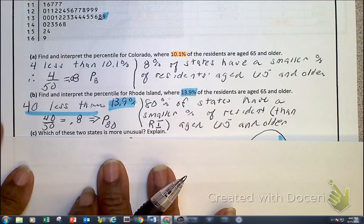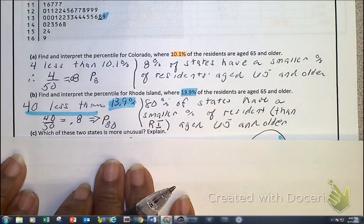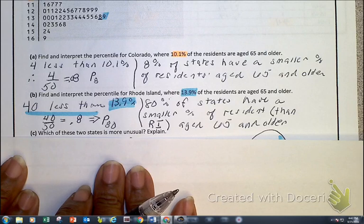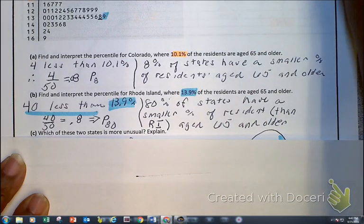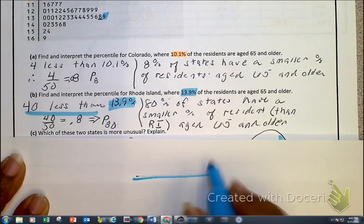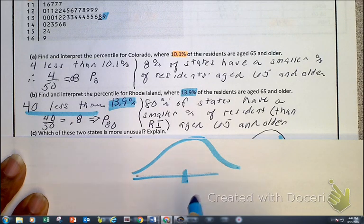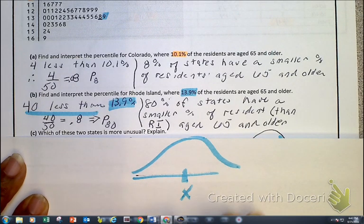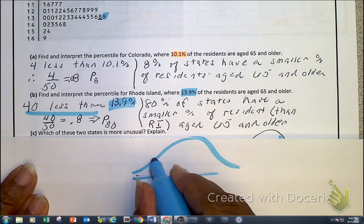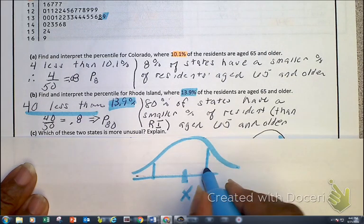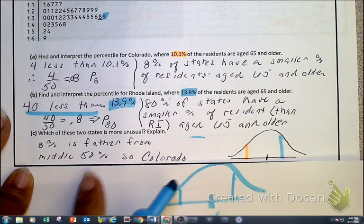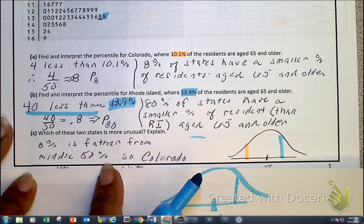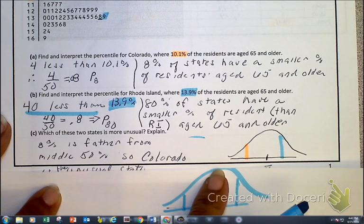Now, let's look at this next question. Which of these two states is more unusual? When we're talking about unusual, we're talking about how far away from the mean. How far away from, I'm doing my air quotes right now, average. 8% is over here somewhere. 80% is here. 80% is closer to 50%. So the one that's more unusual is the one that's the farthest away from the middle 50%, which is Colorado.